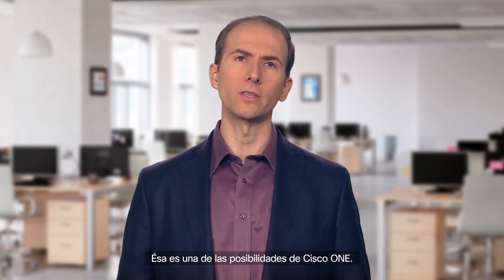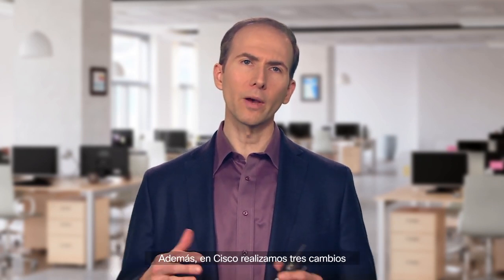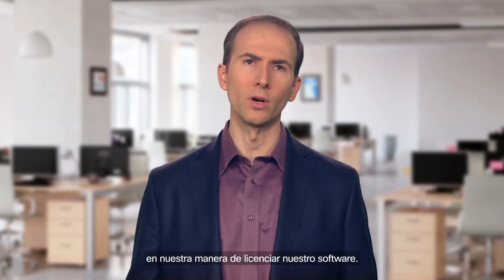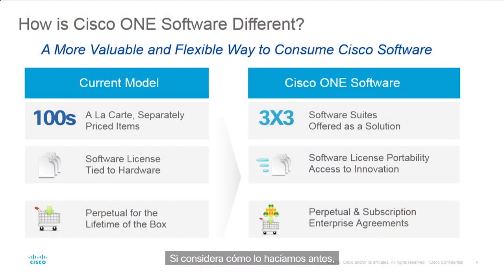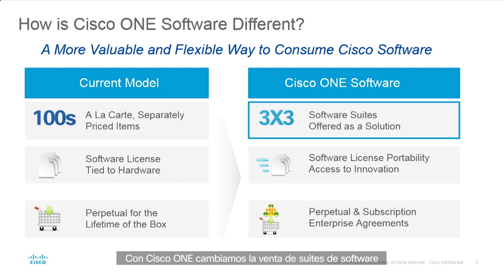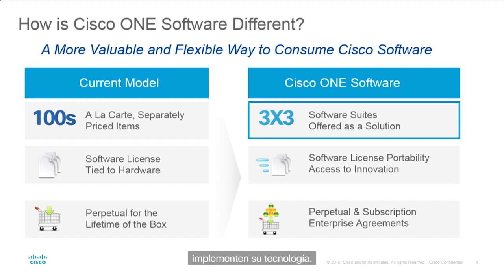When we think about Cisco One overall, there are really three things that differ from how we used to license our software. In the current model, we traditionally sold software features individually or a la carte, each with their own price point. With Cisco One, we've constructed a set of software suites designed as solutions for how most customers deploy their technology.